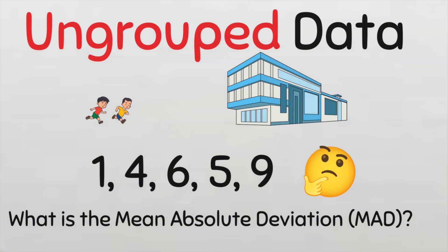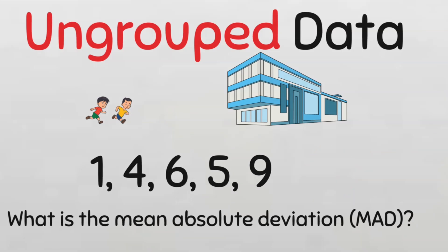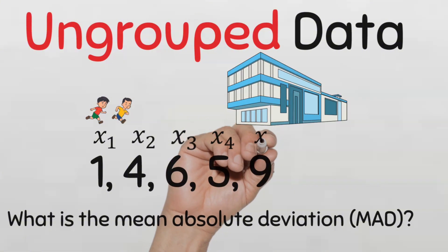To begin with, let's represent each of our data points with the proper statistical notation. So this first data point is our x1, the second is x2, then 6 here is x3, 5 is x4, and our x5 is 9.